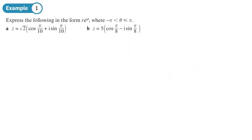In this example we're going to write the complex number in exponential form. Part a is easy because r is just root 2 — it's already there — and the argument is π/10, so I can put those straight into the exponential form: root 2 · e^(iπ/10).